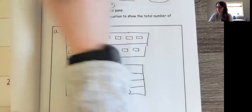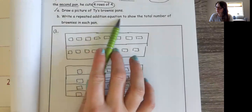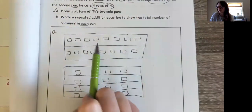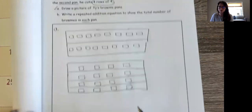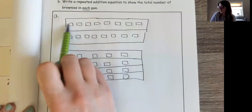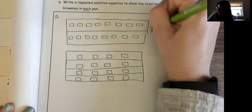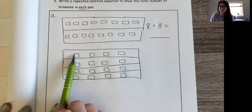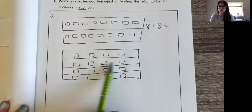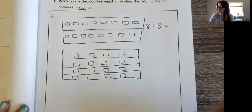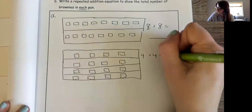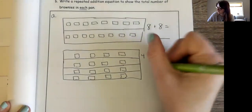Let me give myself a little check. Then I need to write a repeated addition equation to show the total number of brownies in each pan. For the first pan I have two rows of eight — eight here and eight here — so my equation is eight plus eight equals. For the second brownie pan I have four rows of four, so it's going to be four plus four plus four plus four equals.